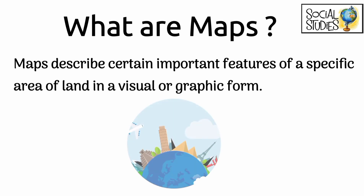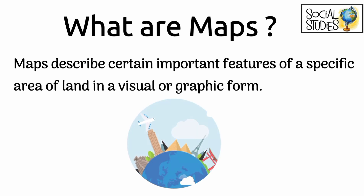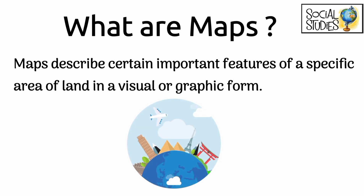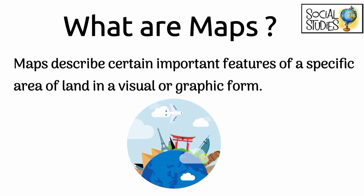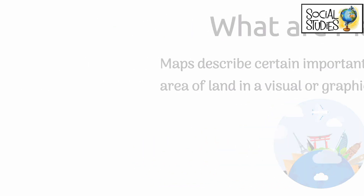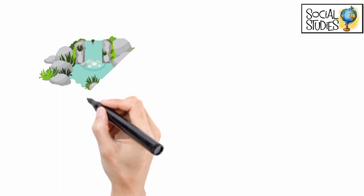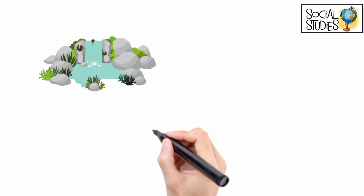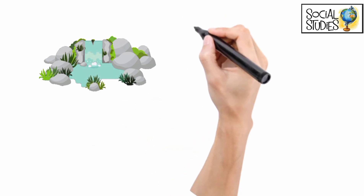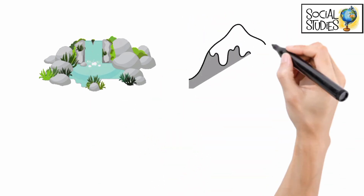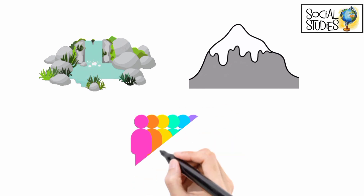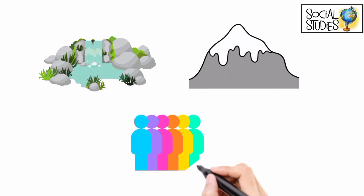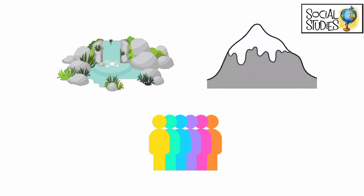A map may show us natural features such as rivers and mountains in a place, and the map may also show us the distribution of human population.